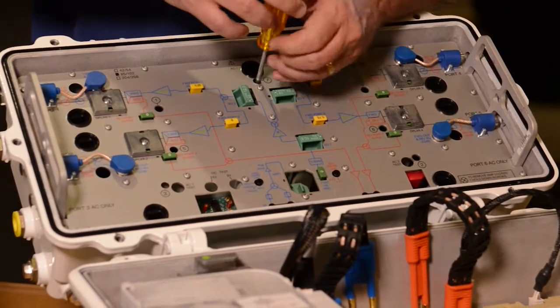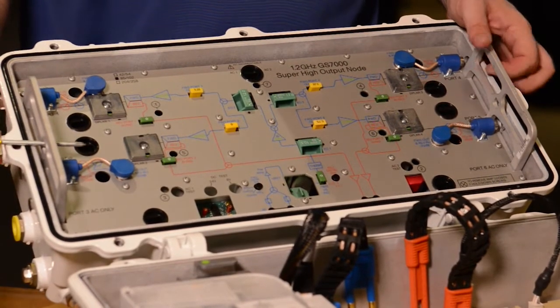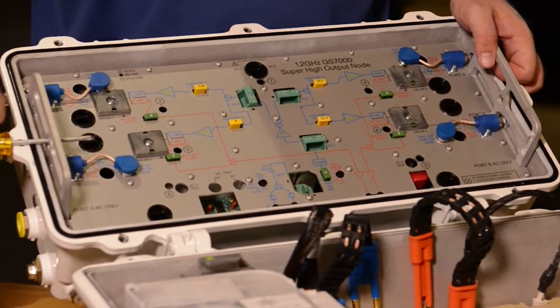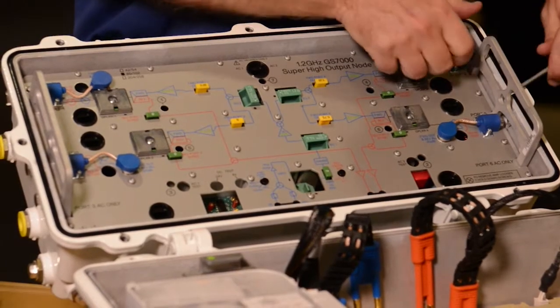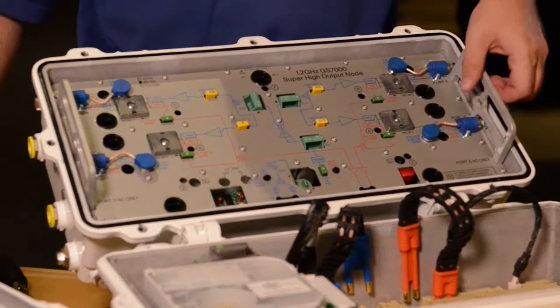Next, there's a pry bar located on each side of the RF amplifier to loosen it. And then you simply remove the RF module from the housing.